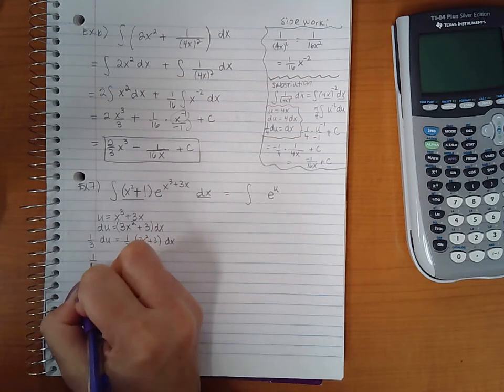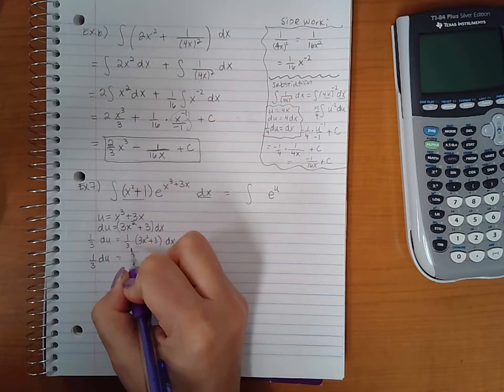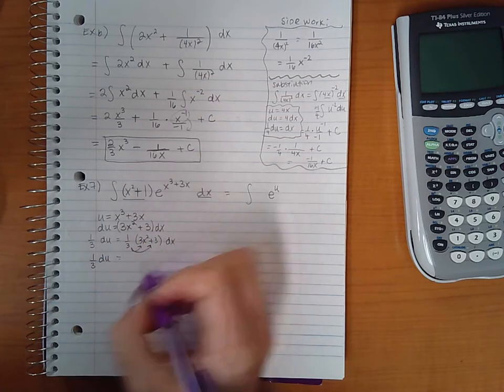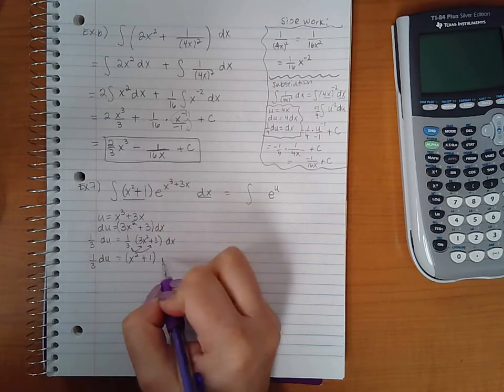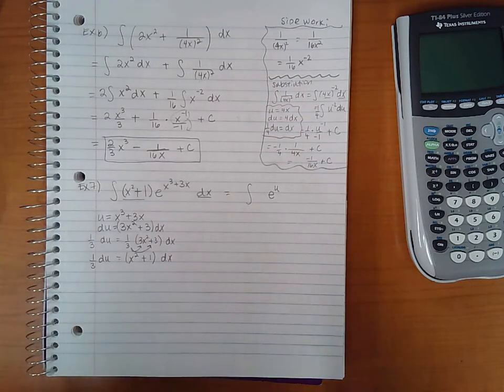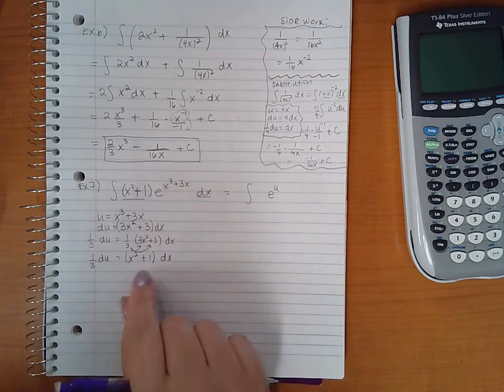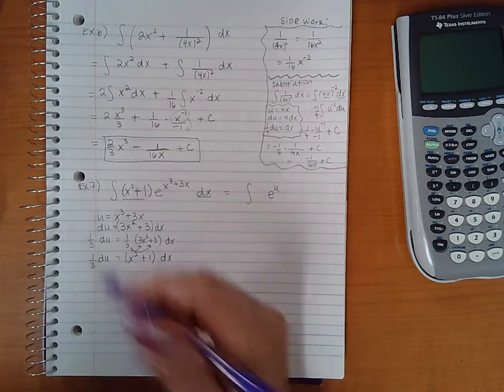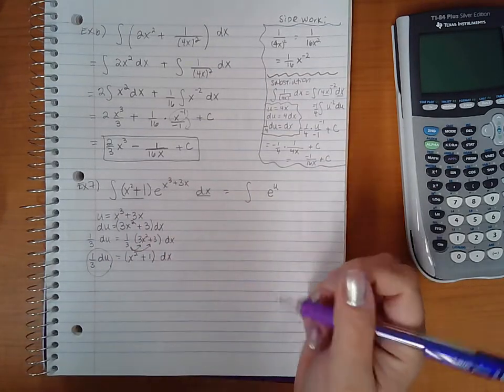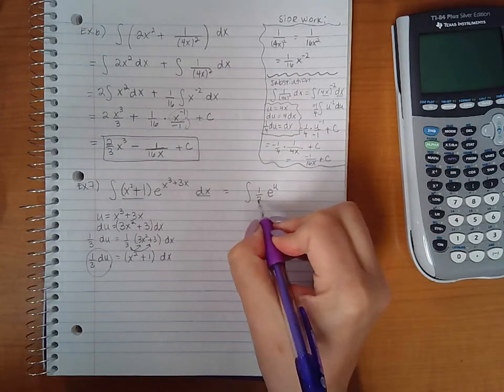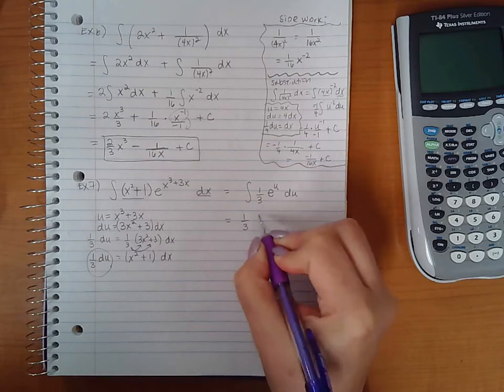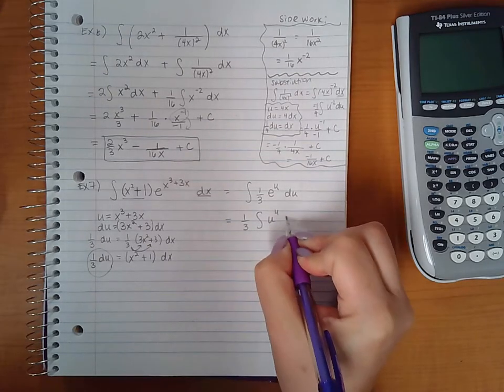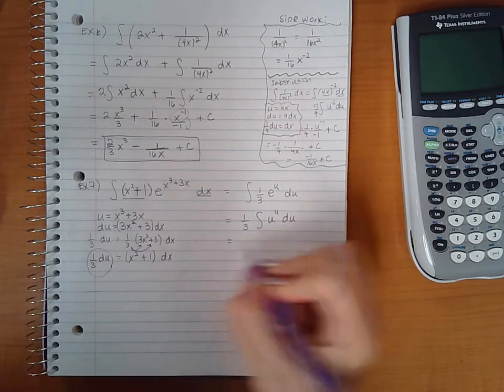And when I do that, this one third will have to get distributed in there, leaving me with just x squared plus one times dx. And now I know what to substitute for x squared plus one times dx - this is what gets substitute. So I could put the one third here and the du there, or I could have put the one third all the way on the outside since it is just a constant multiplier, and the integral of e to the u.